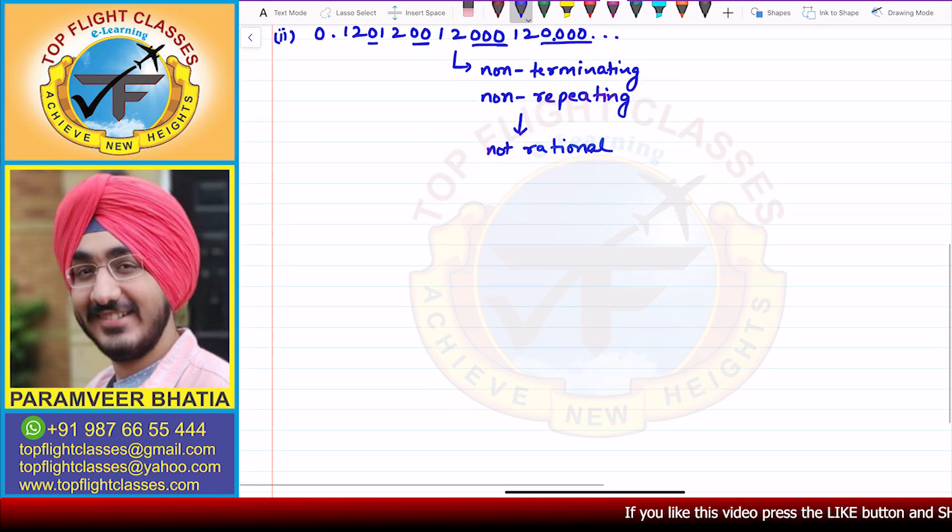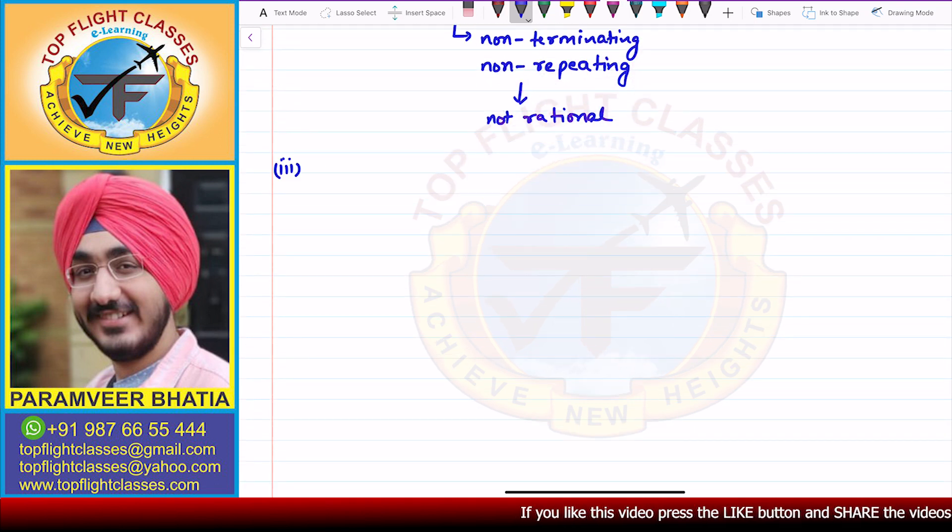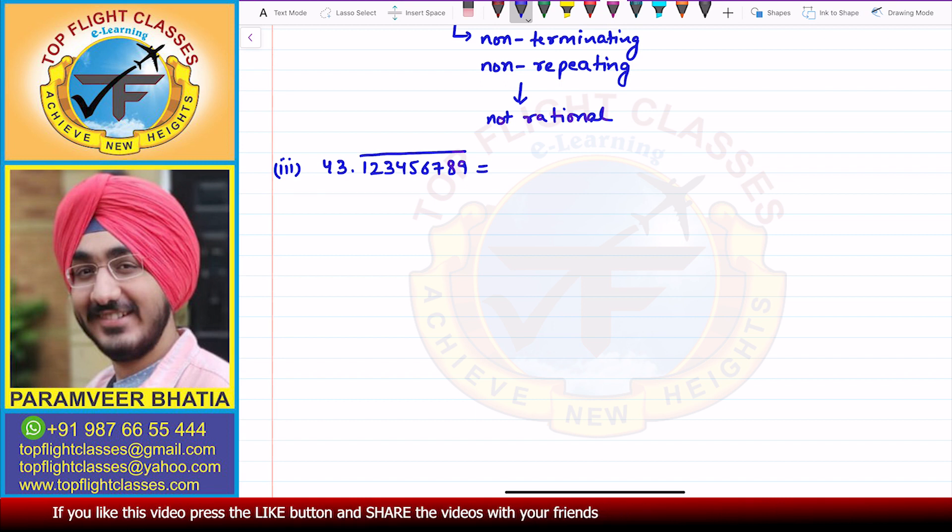Now we will see the third part. In the third part the number is 43.123456789 with a bar. So this bar means that if we open this, what we will get is 43.123456789, then it will start again 1, 2, 3, 4, 5, 6, 7, 8, 9.